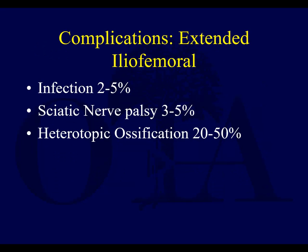The big complication is heterotopic ossification. You're taking all the muscles off the outer table, and HO tends to occur more when you elevate muscles off the outer table than when you elevate muscles off the inner table. So you really have to strongly consider prophylaxis for these patients.